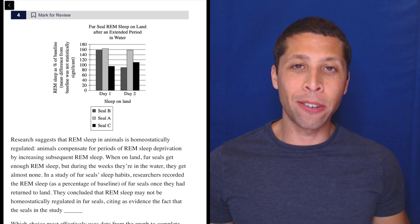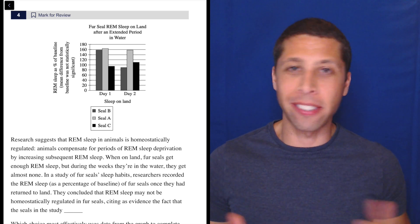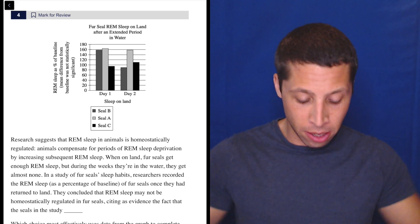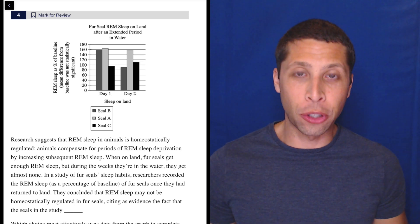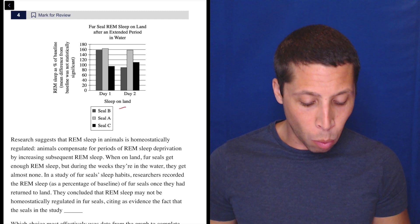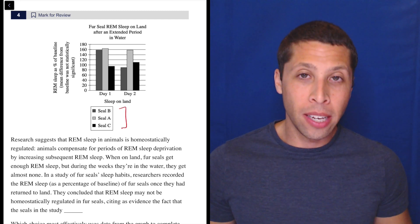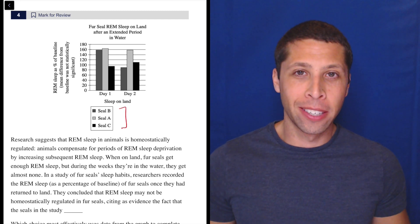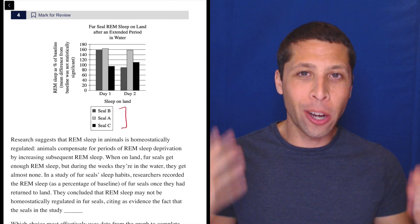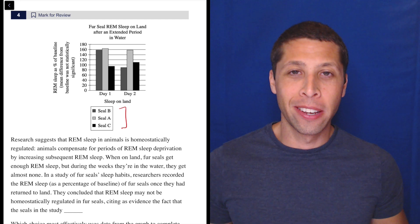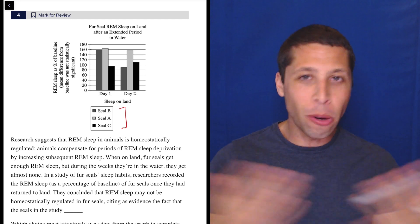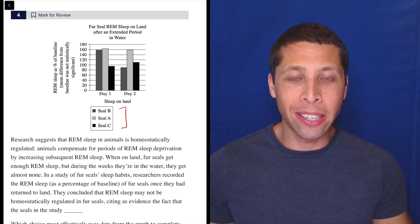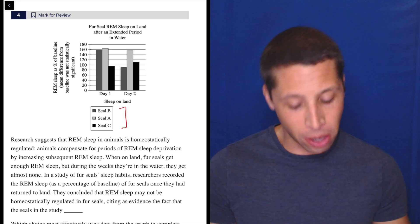If you had any doubt that sometimes the SAT just does stuff to mess with you, just look at this stupid chart. Why is Seal B first before Seal A? Why not go A, B, C? This makes no sense. Why do that? That is so dumb. The only reason they're doing it is to mess with you.